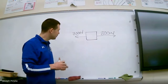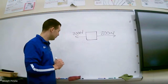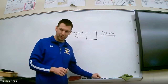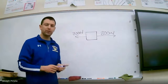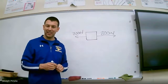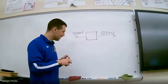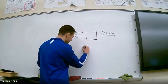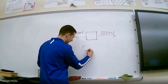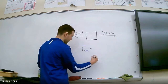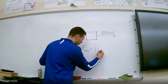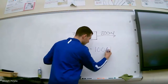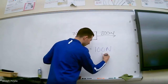Since I pulled with 800 newtons and there was 700 newtons of static friction acting against me, there is a net force acting on the fridge of 100 newtons to the right.